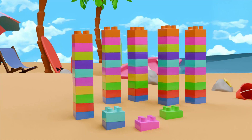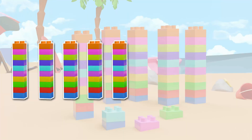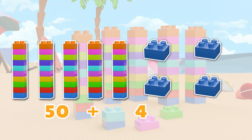Here is the last one. First, let's count the groups. One, two, three, four, five. There are five groups. And now, let's count the individual blocks. One, two, three, four. There are four blocks. So, we can say there are five block sticks and four single blocks. That means five times ten, that is fifty, is added with four, which is fifty-four. So, in total, there are fifty-four blocks. Great counting!